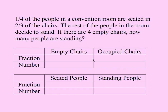We actually know three of these eight spots in the table. The first: one-fourth of the people are seated — one-fourth is a fraction about seated people, so it goes here. Next, one-fourth of the people are seated in two-thirds of the chairs, meaning two-thirds of the chairs are occupied — that's a fraction about occupied chairs, so it goes here.